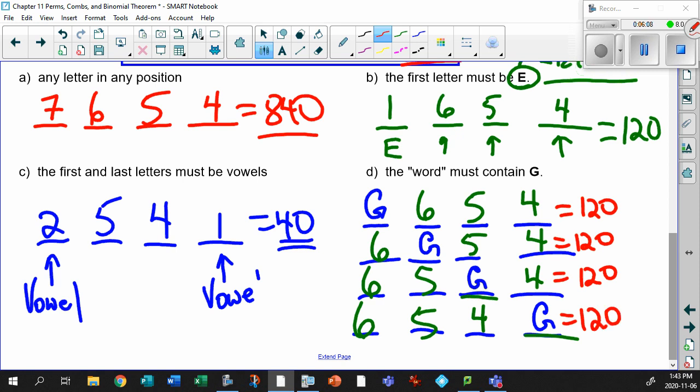So, there's 120 arrangements just with the letter G in the first. 120 if the letter G is in the second position. Third position and fourth position, as you can see. So, I want how many in total? Well, count them up. One, two, three, four. You can simply go 120 times four or just add them all up to give you 480 possible arrangements of this.